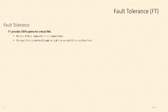As of vSphere 6, another thing fault tolerance now provides is zero data loss — no loss of data transactions or connections. How fault tolerance works is you enable it on one virtual machine at a time, and that primary virtual machine is protected by mirroring it to an identical virtual machine that runs on another host.